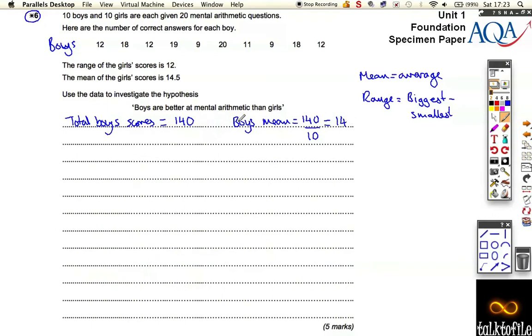Now, the way the marks break down is, if you've worked out the mean, that's actually two of these five marks. So it's very simple - even if you're not sure what you're doing, it's worth having a go at just doing the same thing that the girls have done, and you can earn yourself marks.